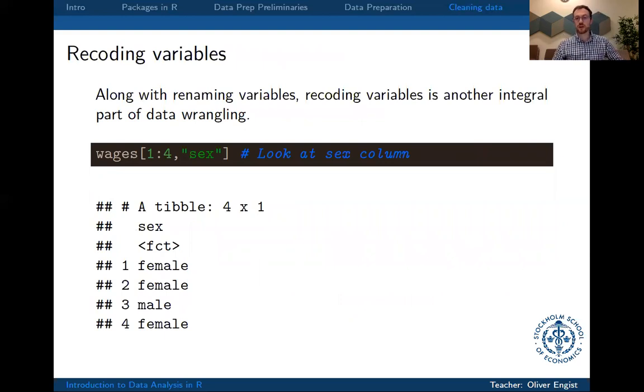Also, very often, you get data that you would like to have recoded, so if, for example, data is provided as a character or as a string or a factor that you would like to turn into, let's say, numeric values, so it could be, for example, here we have sex as a factor.